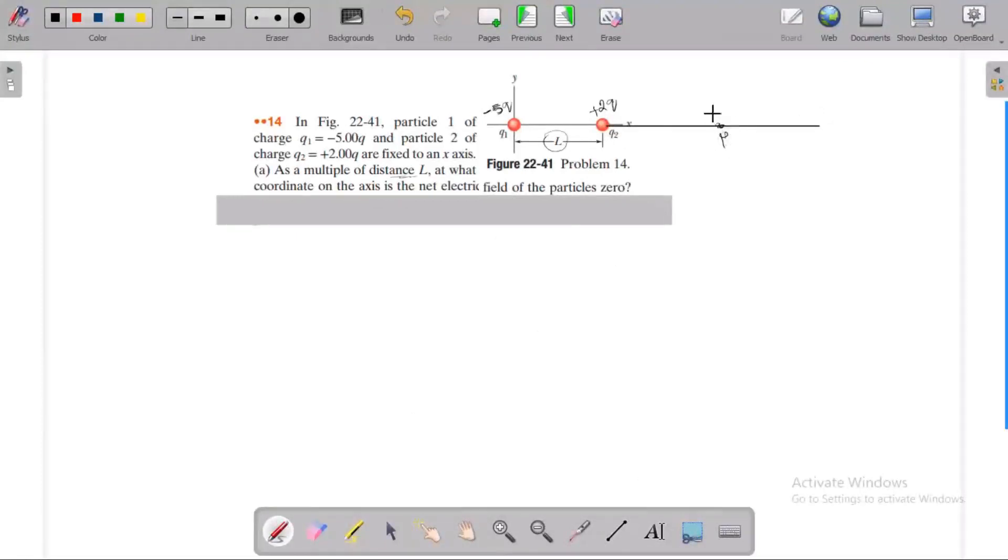We choose point P at some distance from Q1 or Q2 where the net electric field is going to zero. We need to find this distance in terms of L, the multiple of L.